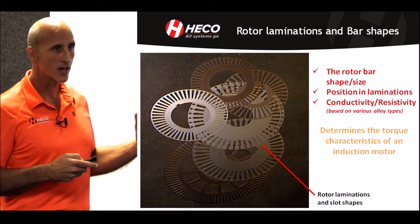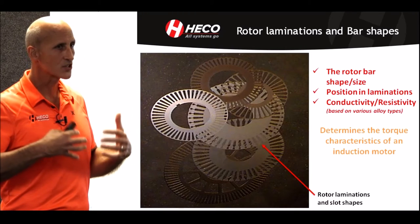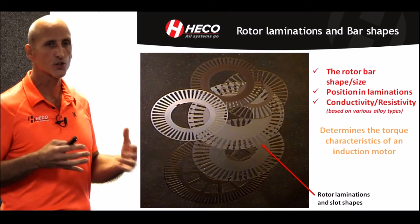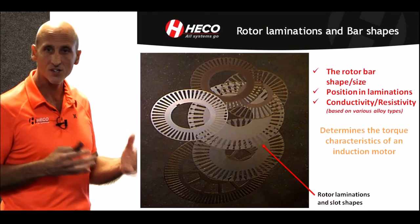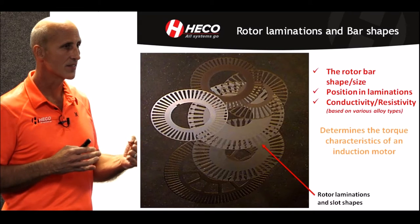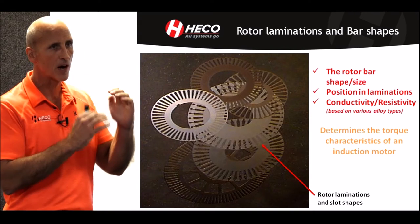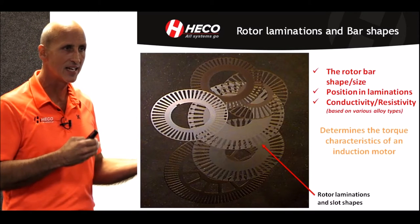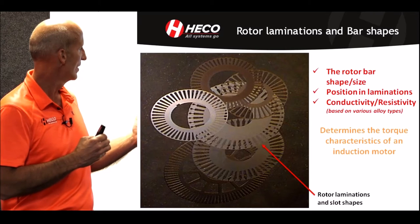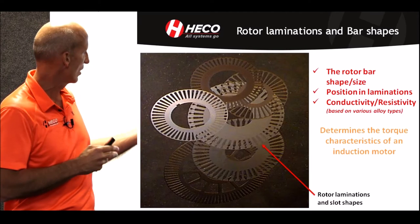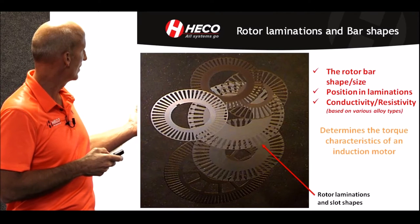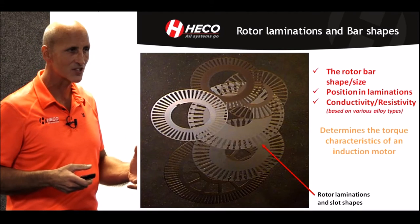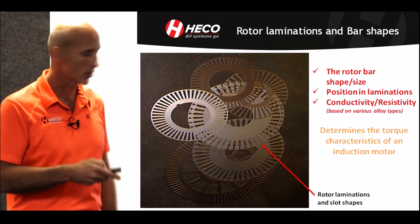This slide is essentially talking about what actually produces the torque or the torque characteristic of a motor. The rotor is actually what does it — the shape of the bar, the size and position of the bar in the lamination, the alloy type, conductivity, resistivity, aluminum or copper — essentially copper being the alloys. In every induction motor design, it's the rotor that's actually determining the shape of the speed-torque curve.